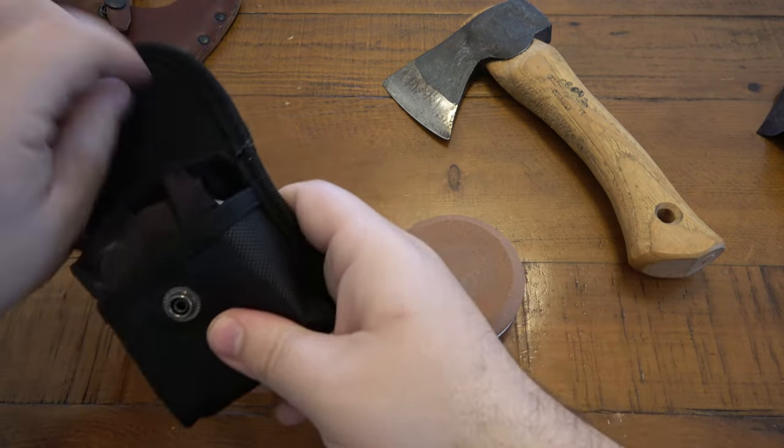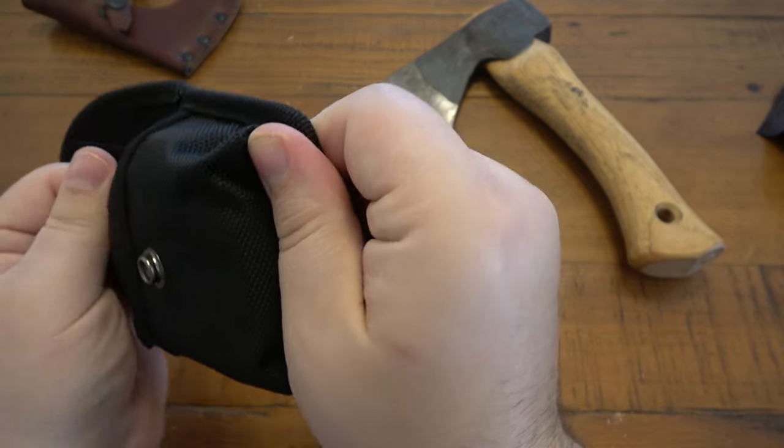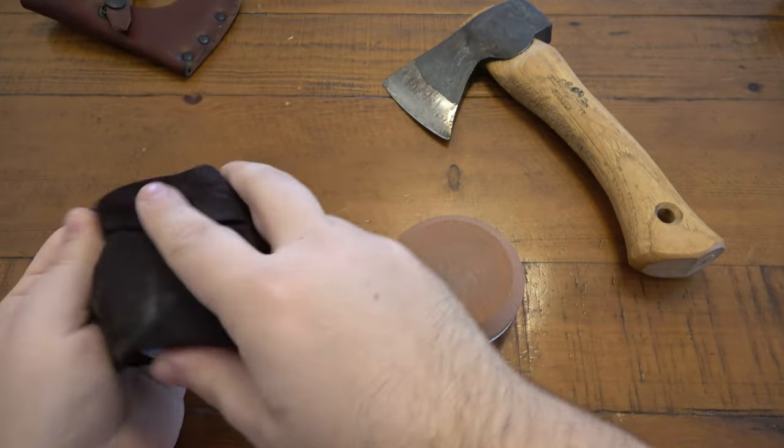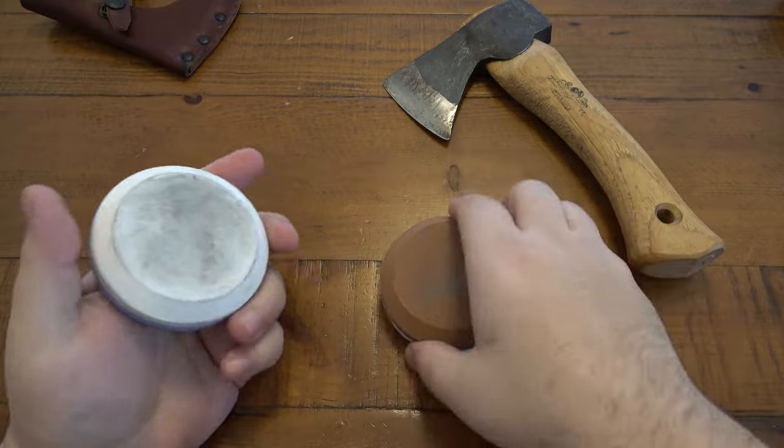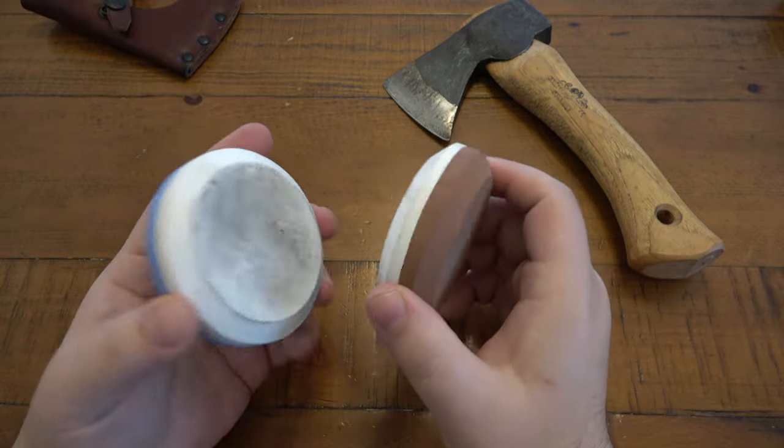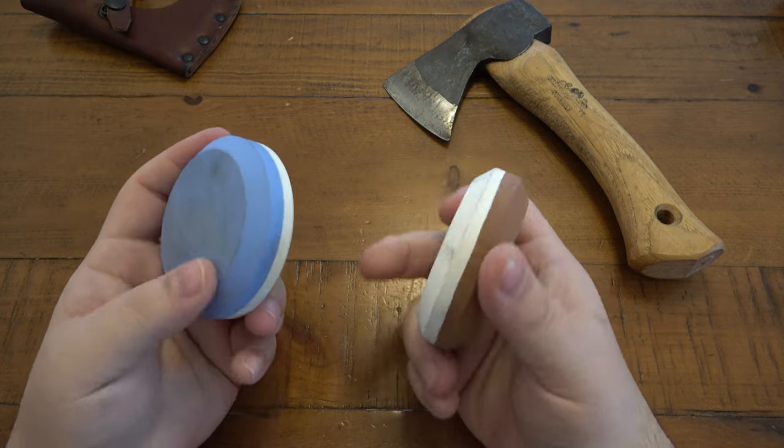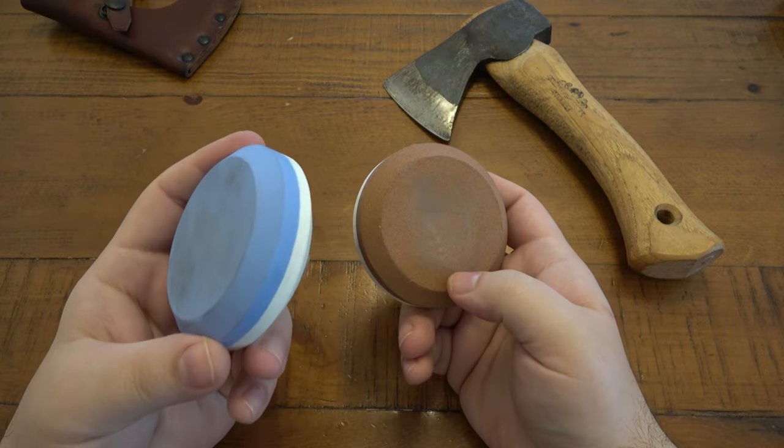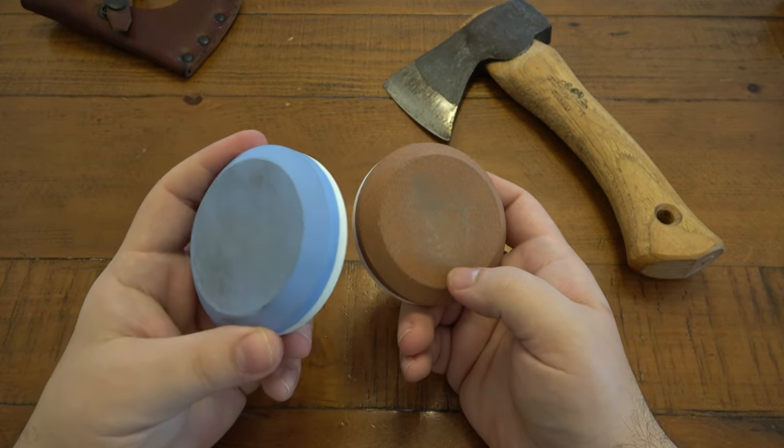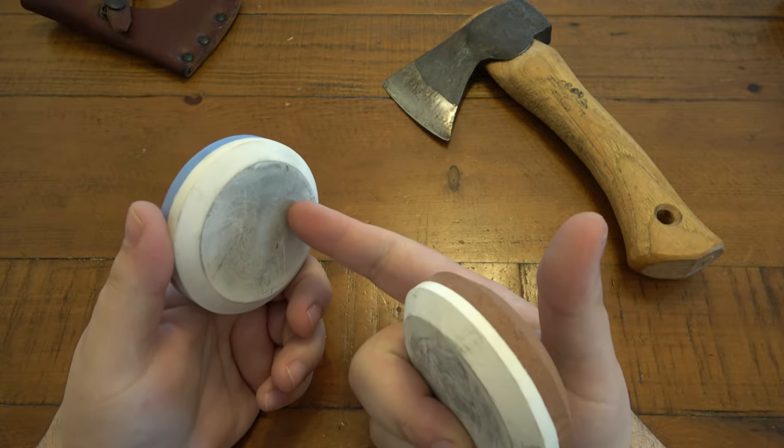We have two different models here. See, this one's blue and white and this one is red and white. You'll see a variety of different colors. Often these represent the grits. The blue on here is 240 grit and the white side is 400 grit.